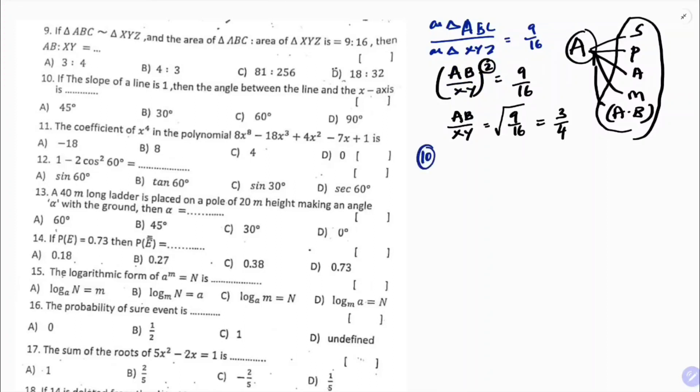Question 10: if the slope of a line is 1, find the angle made by the line with the x-axis. Equate slope with tan θ: tan θ = 1, so θ = 45°. The correct option is A, which is 45 degrees.